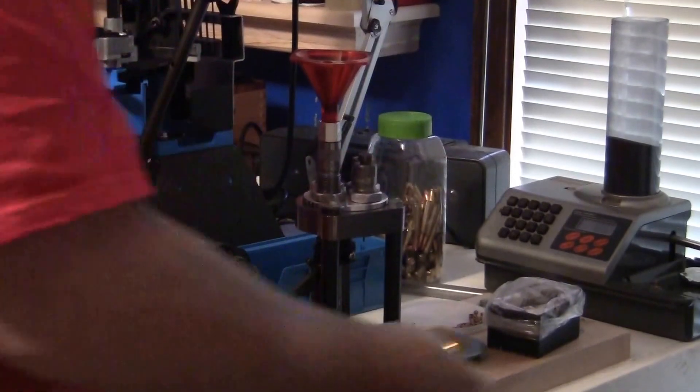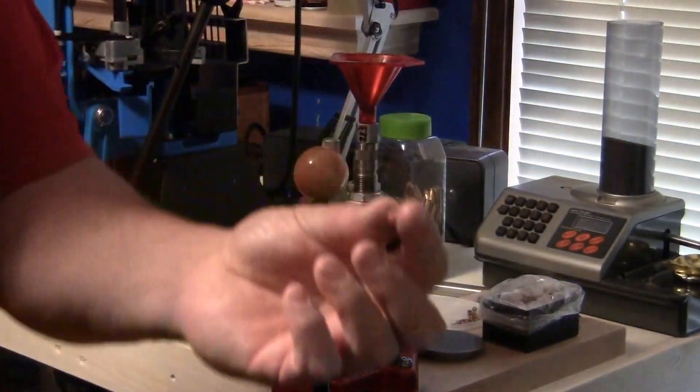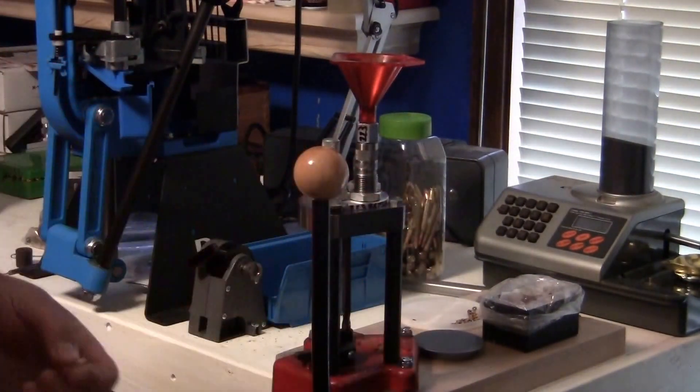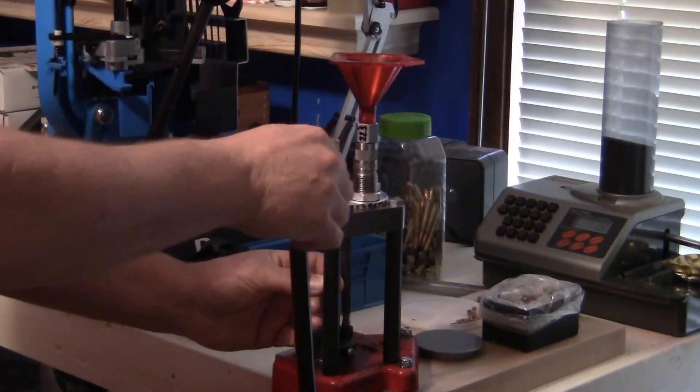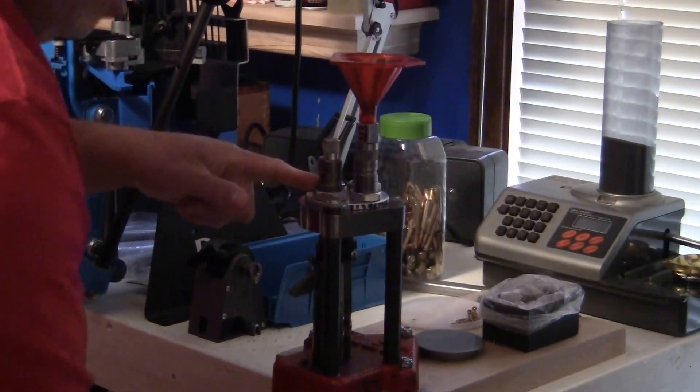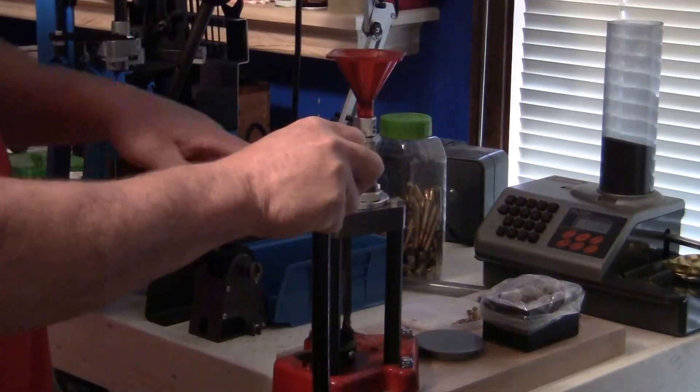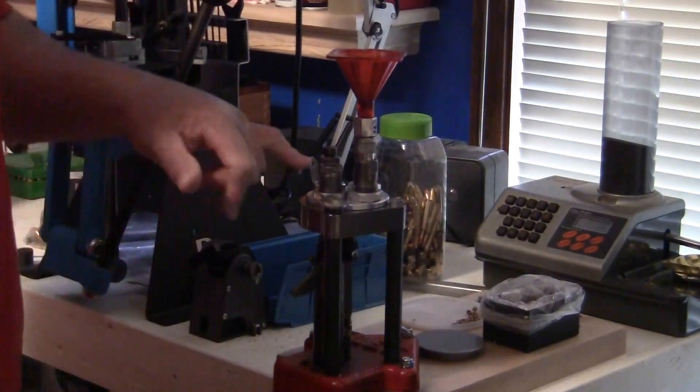There's 24.9 on the dispenser. Dump the powder through the die, pick up a bullet. That's a Nosler 55 grain flat base hollow point. Flies really good, shoots good in my Savage Model 11 BT. I'm going to hold it going into the bullet seating die.